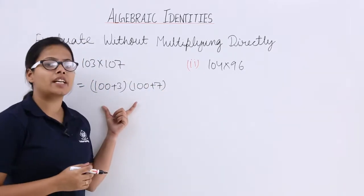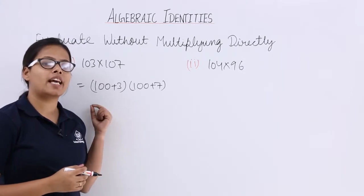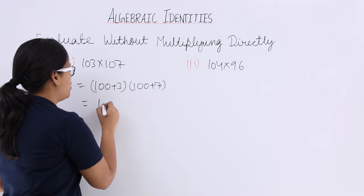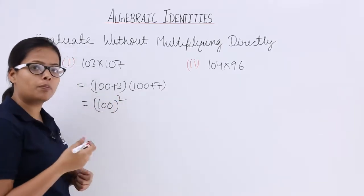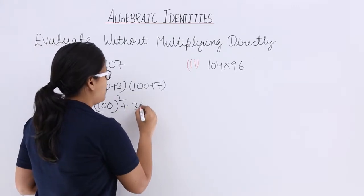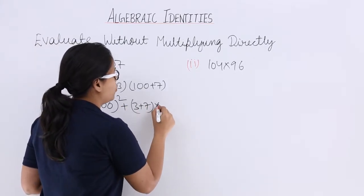So using identity 4 you can expand this (x + a)(x + b). So you can write this as x² plus (a + b) times x, which is (3 + 7) times 100